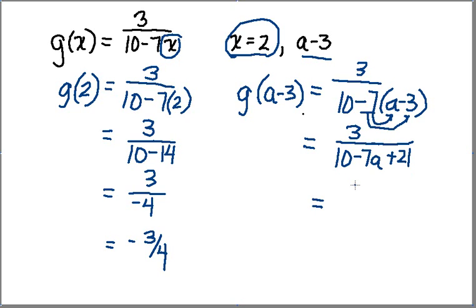And so now, all I need to do is combine like terms in my denominator. I got 10, and I've got 21, so that gives me 31. And I've got a minus 7a. And so really, that's my answer there in simplified form. 3 over 31 minus 7a.